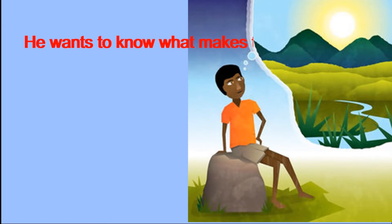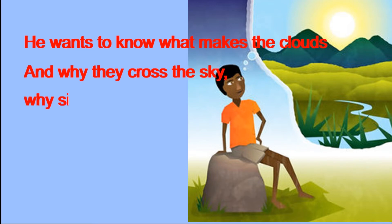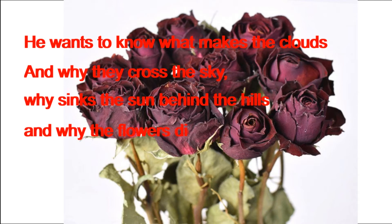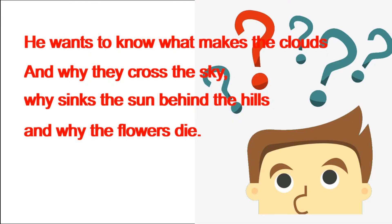He wants to know what makes the clouds and why they cross the sky, why the sun sinks behind the hills, and why the flowers die. In this stanza the poet gives more examples of questions asked by the boy — he wants to know what clouds are made of and why they move up in the sky, and why at sunset the sun disappears behind the hills.